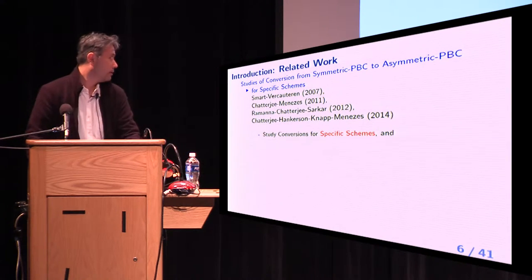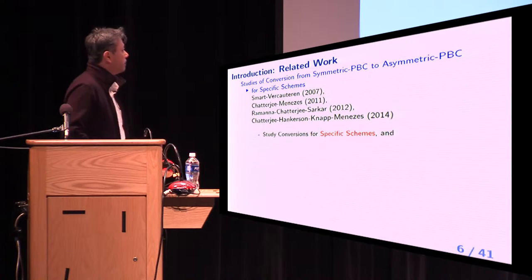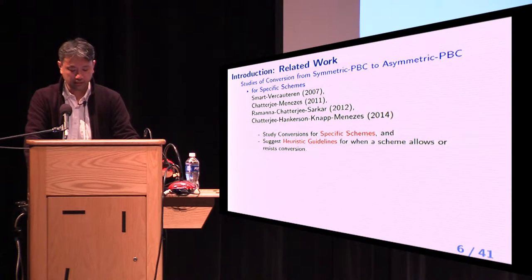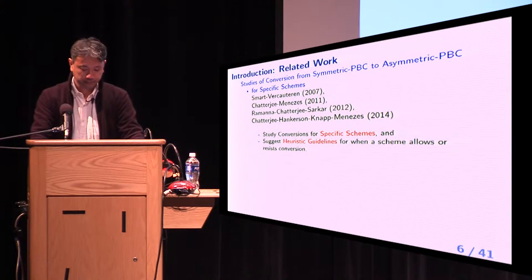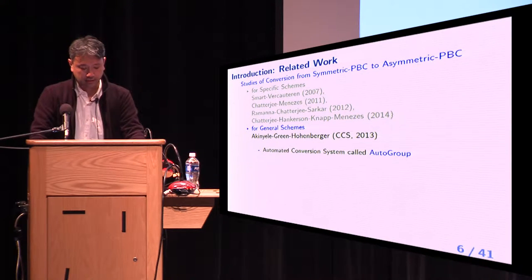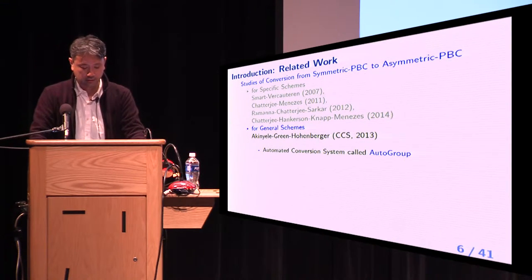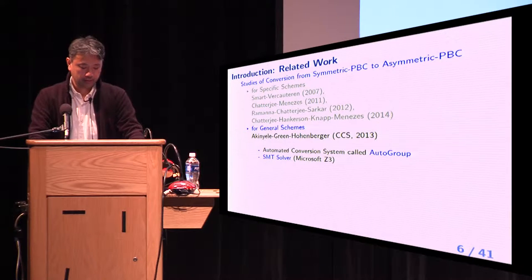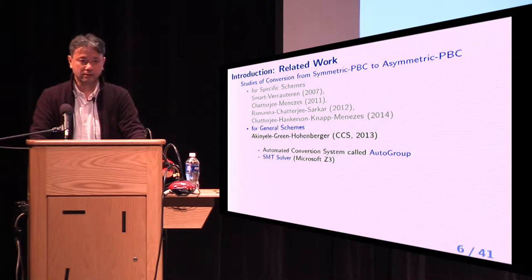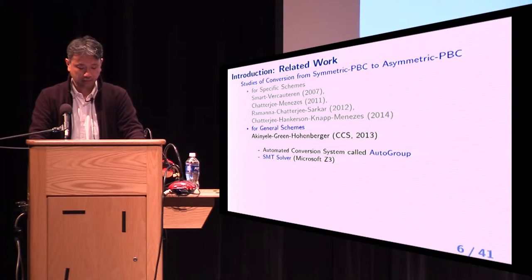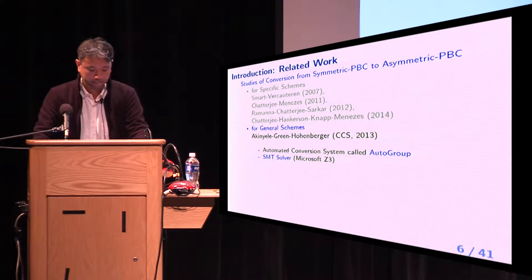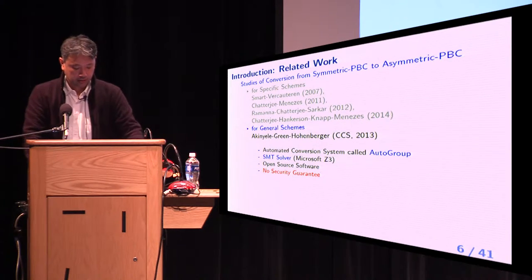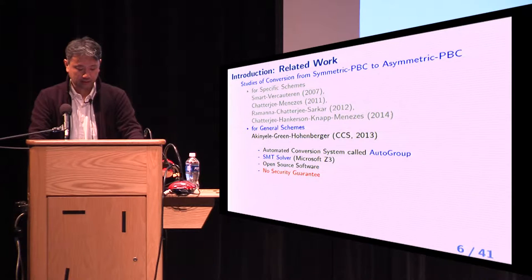For example, these papers study conversions for specific schemes and suggest heuristic guidelines for when a scheme allows conversion. At CCS 2013, Abe et al. proposed an automated conversion system called AutoGroup. To answer previous questions for general schemes, they used SMT Solver, which is an extension of SAT Solver. They opened their software and its source code, but in their work, the resulting scheme has no security guarantee.